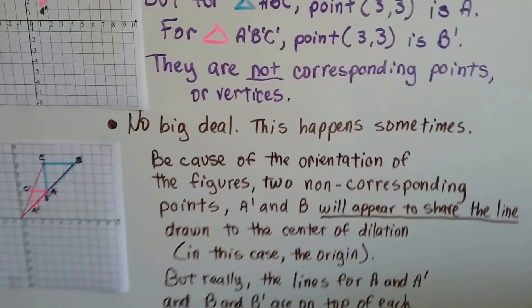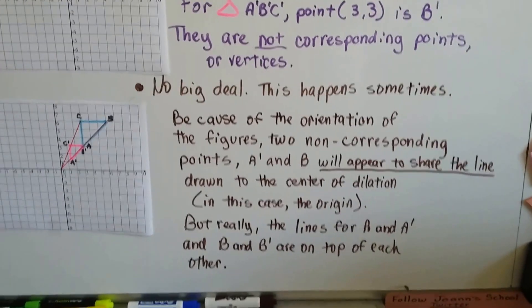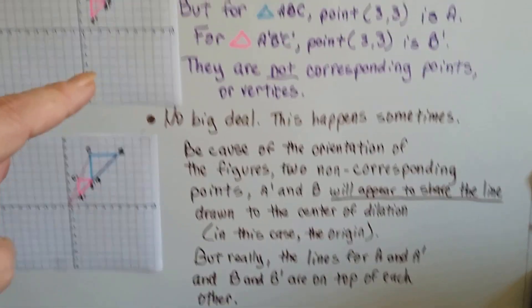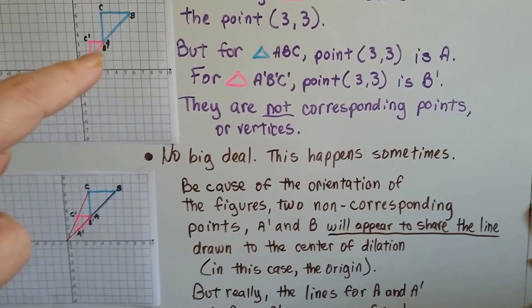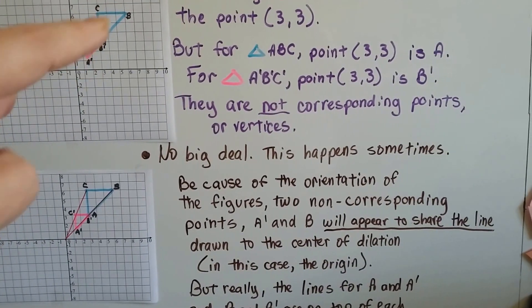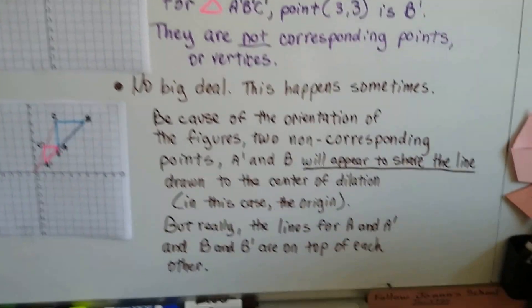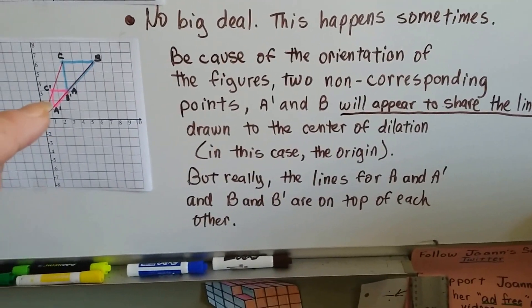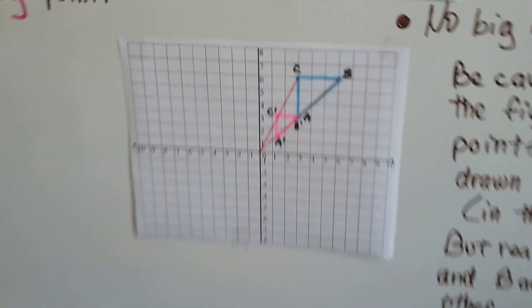It's no big deal, this happens sometimes. Because of the orientation of the figures, the two non-corresponding points A' and B will appear to share the same line drawn for the center of dilation.